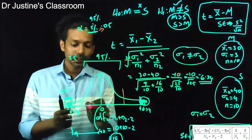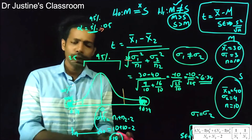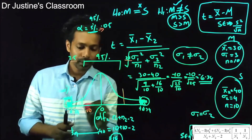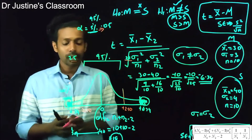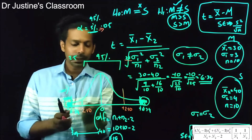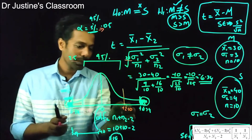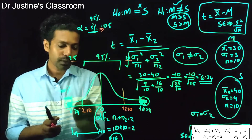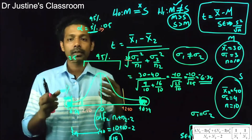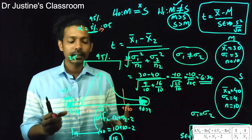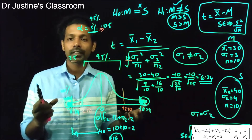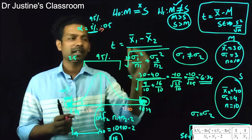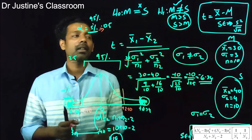For a degree of freedom of 18, the critical t-value at the 0.05 level is ±2.10. If your calculated t-value is more extreme than ±2.10, the chance of that event occurring is less than 5%, and we say there is not enough evidence for the null hypothesis — we favor the alternative hypothesis.